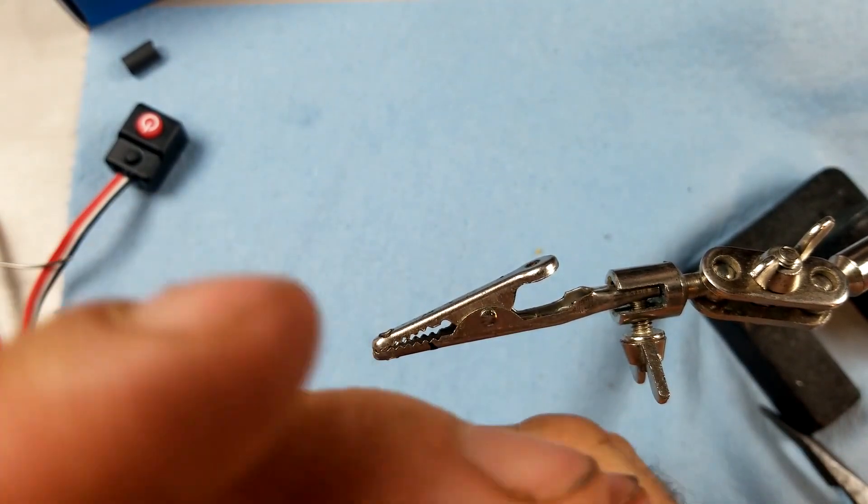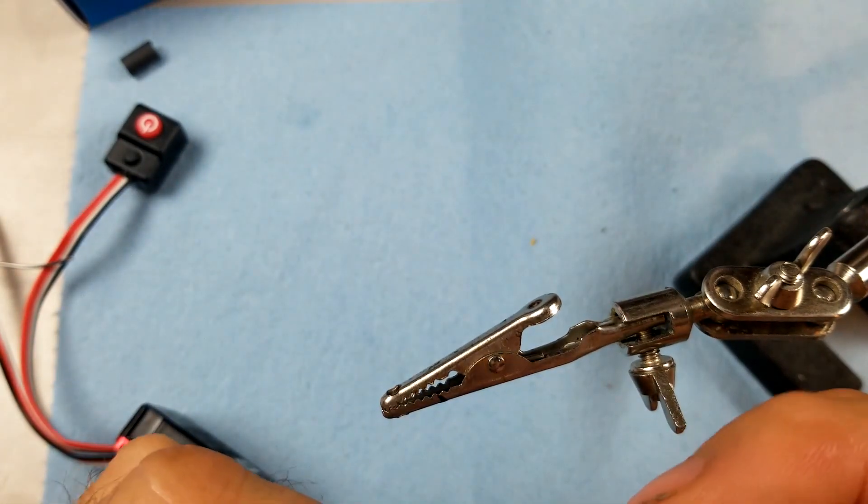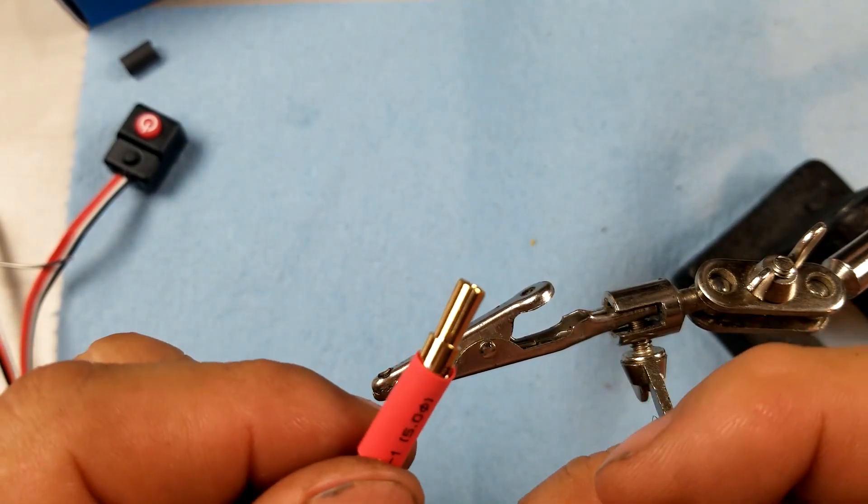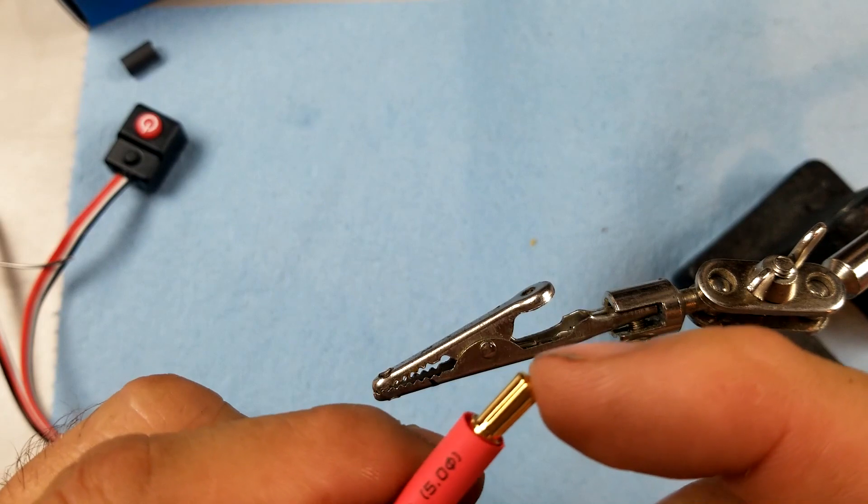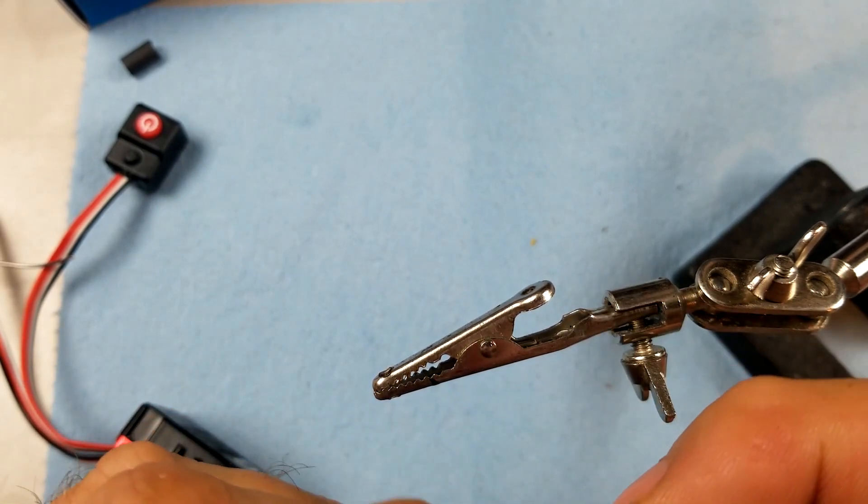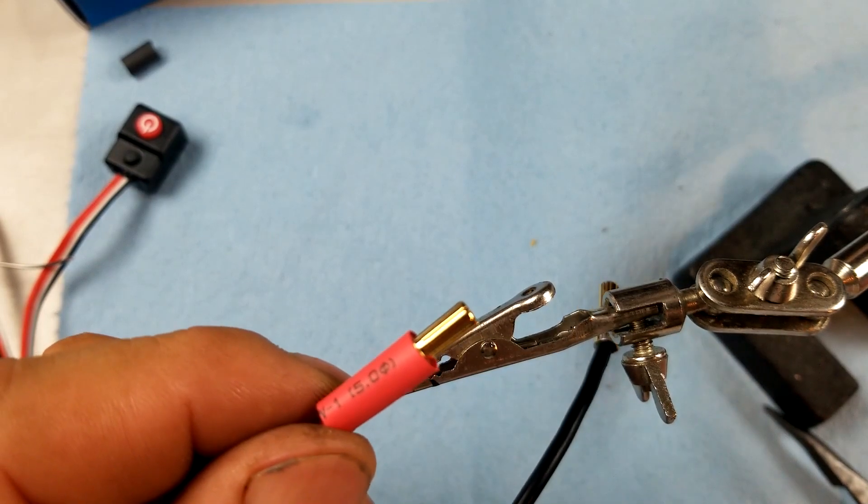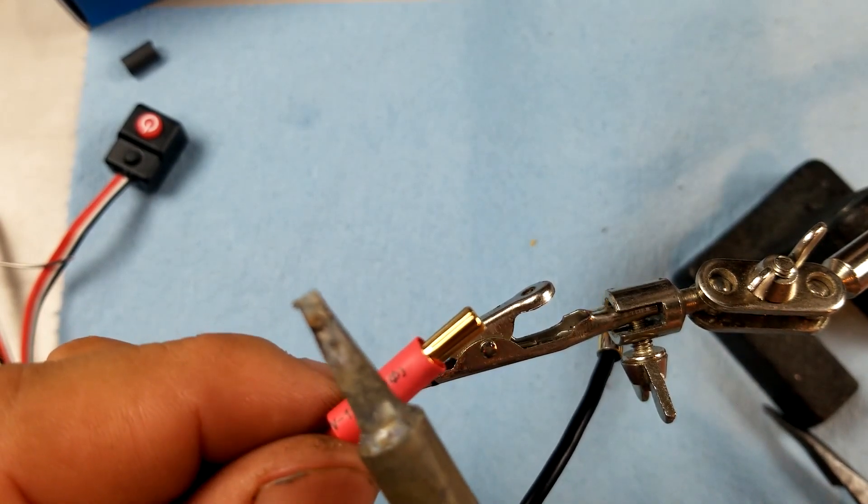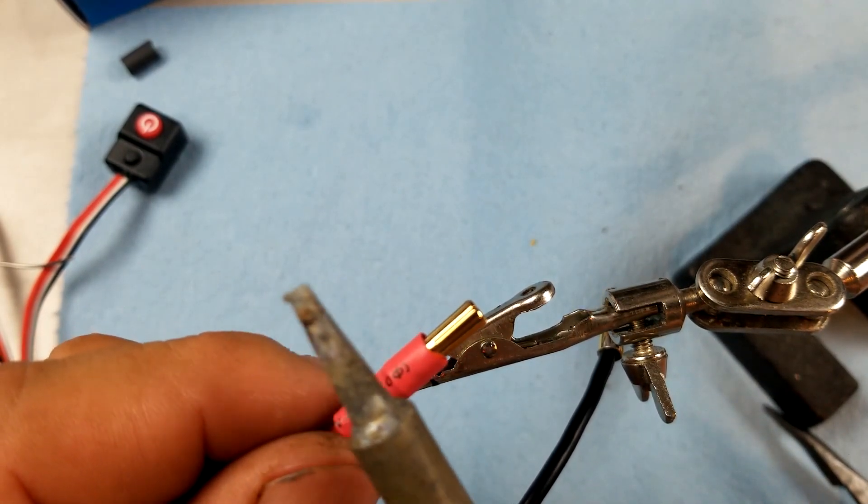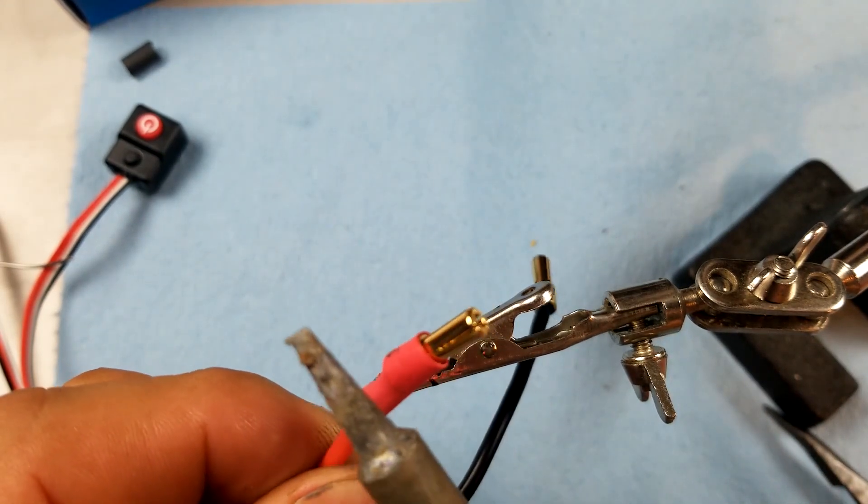So basically when you put them in the female they come up to here. When you put them in the female they come up to this edge. This is why you need a heat shrink to come up to the edge of it, so that it does not short on anything.